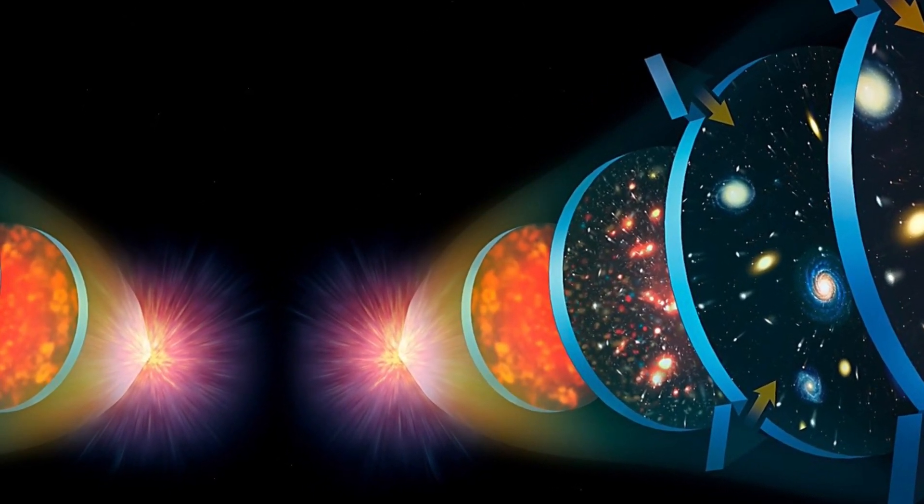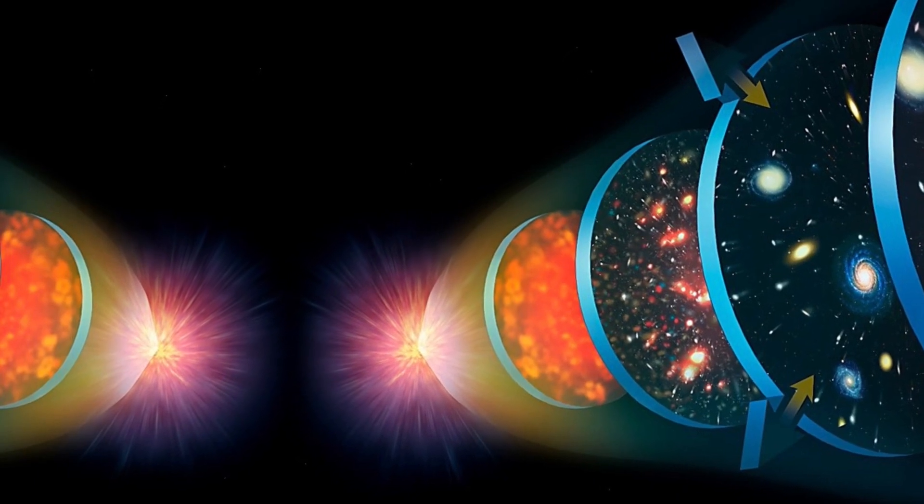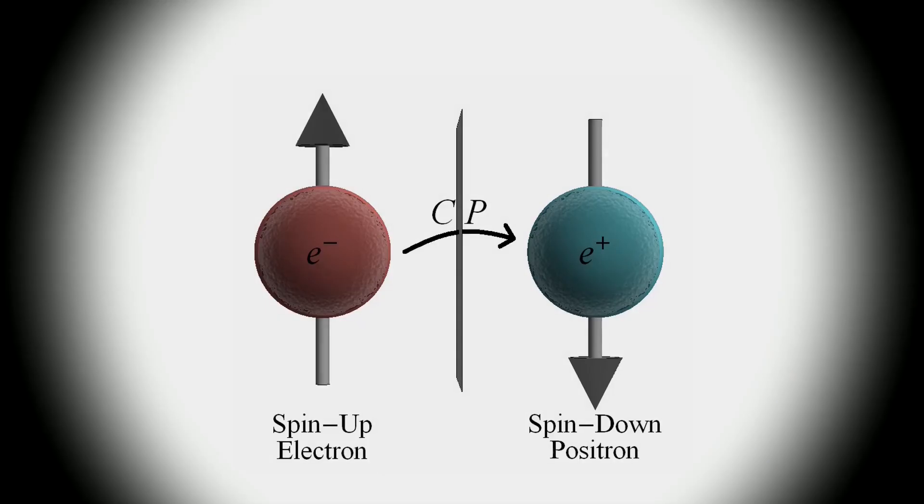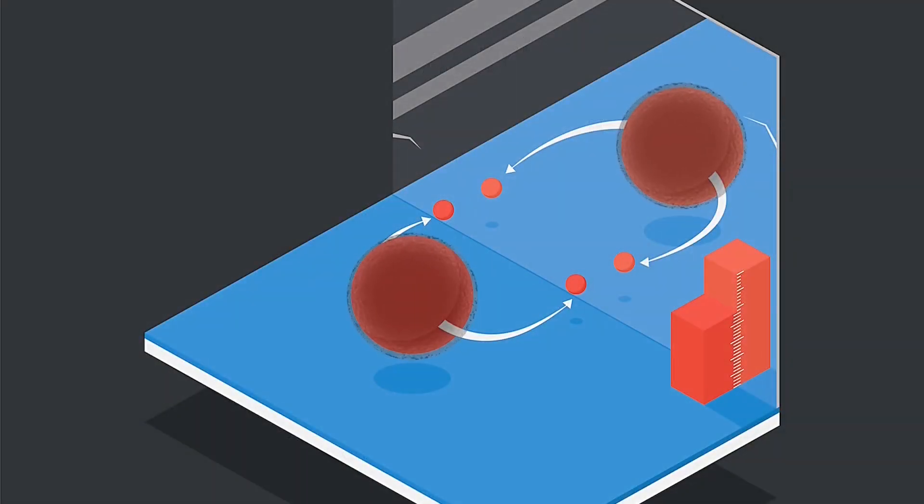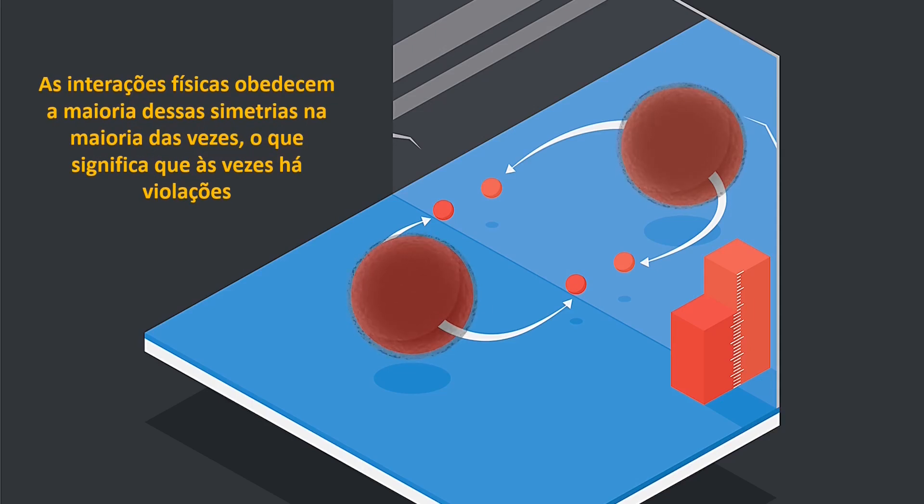E tempo. Se você executar uma interação para trás no tempo, a aparência será a mesma. As interações físicas obedecem a maioria dessas simetrias na maioria das vezes, o que significa que às vezes há violações. Mas os físicos nunca observaram uma violação de uma combinação de todas as três simetrias ao mesmo tempo.